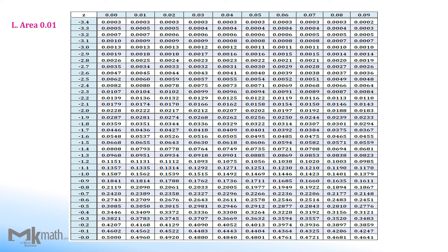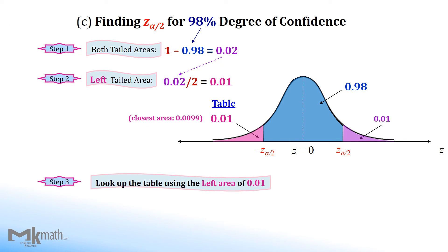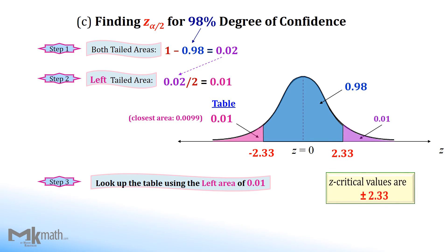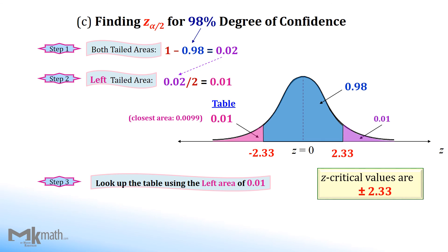We need to locate the left cumulative area 0.01, or close to 0.01, from the inside of the table. We found two values close to 0.01 — one is smaller and the other is larger. Comparing the differences, we use 0.0099. Go straight to the left to read the first two digits of the z-score and straight up to read the second decimal place. So the z-score corresponds to the left cumulative area 0.01 is negative 2.33. Therefore, z-critical values for the 98% confidence level are ±2.33.